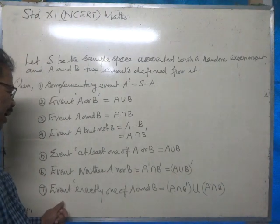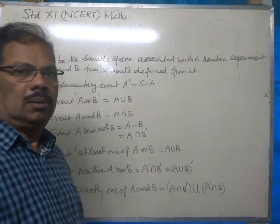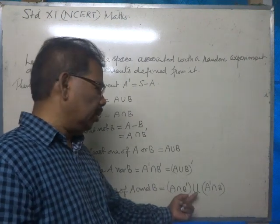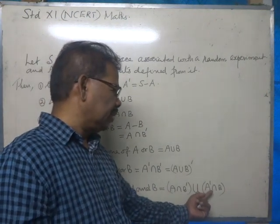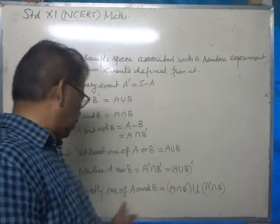Now, event exactly one of A and B. In that case, it is A intersection B dash union B intersection A dash or A dash intersection B. Right.